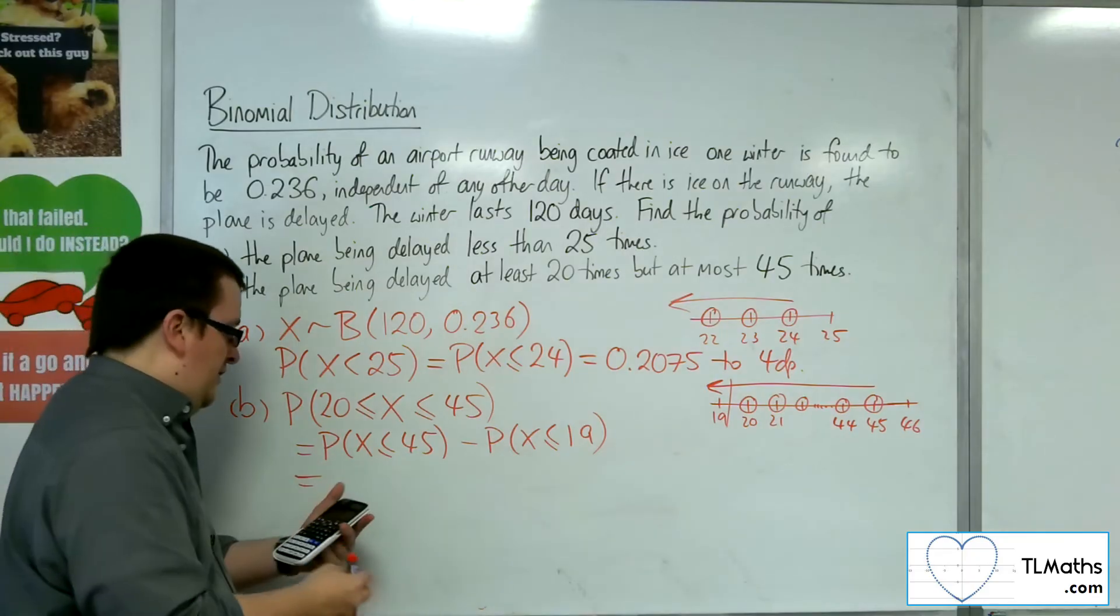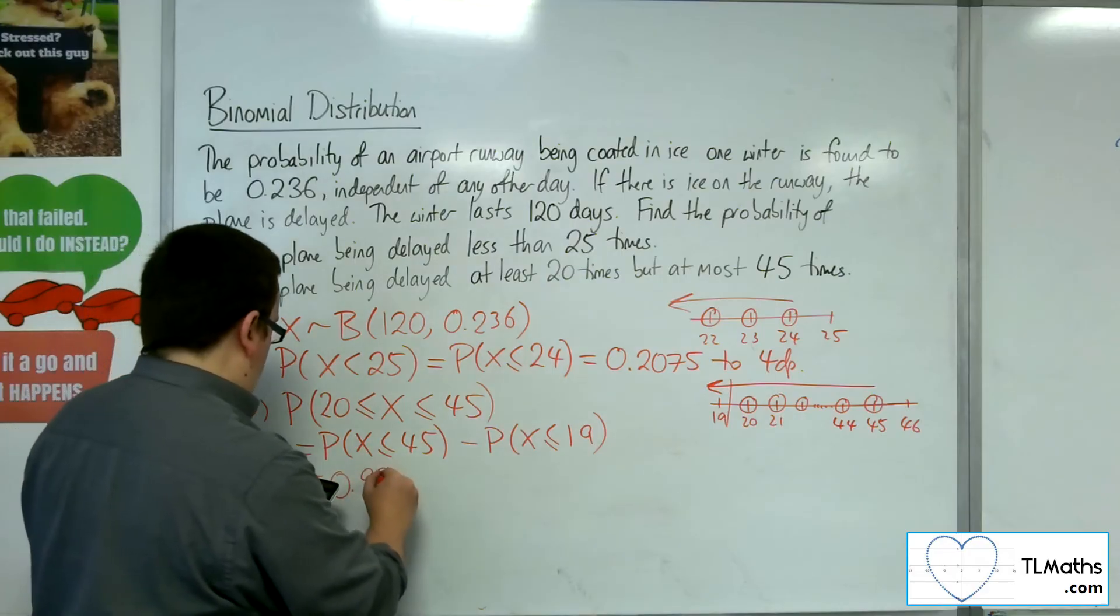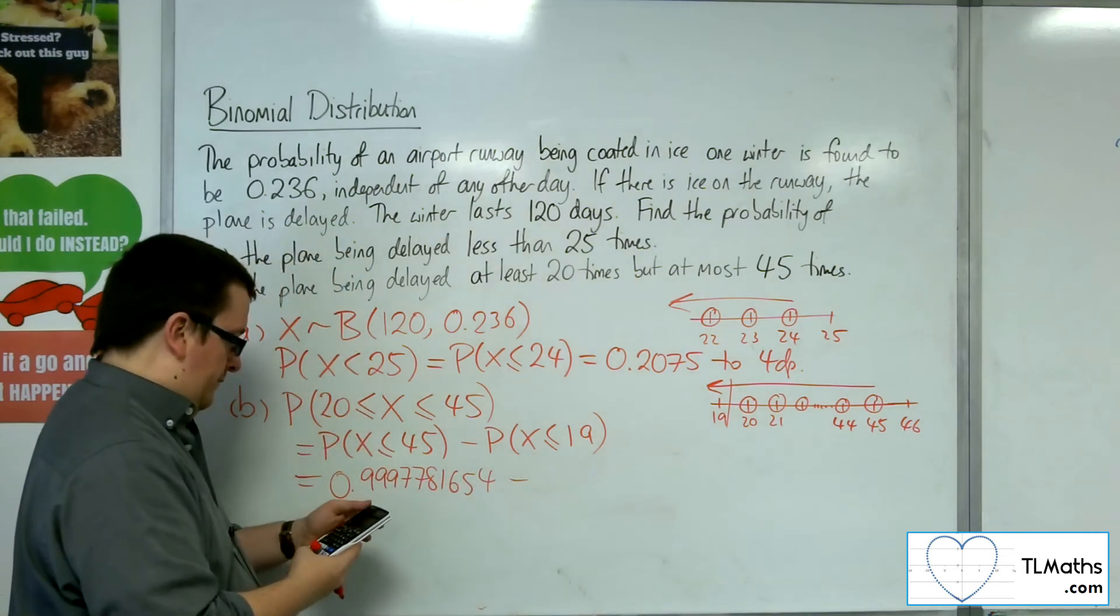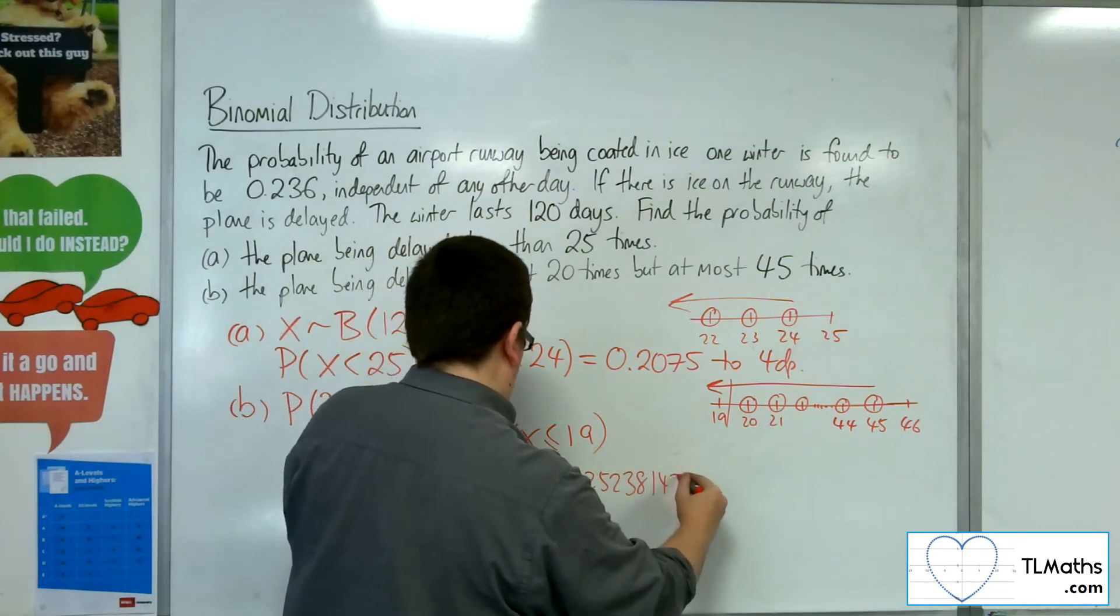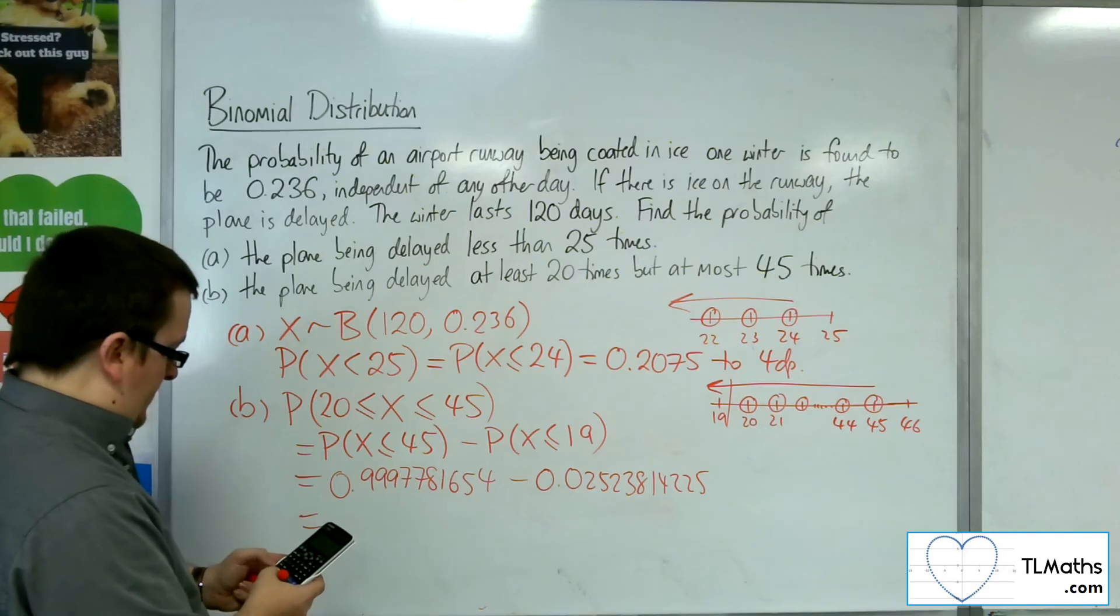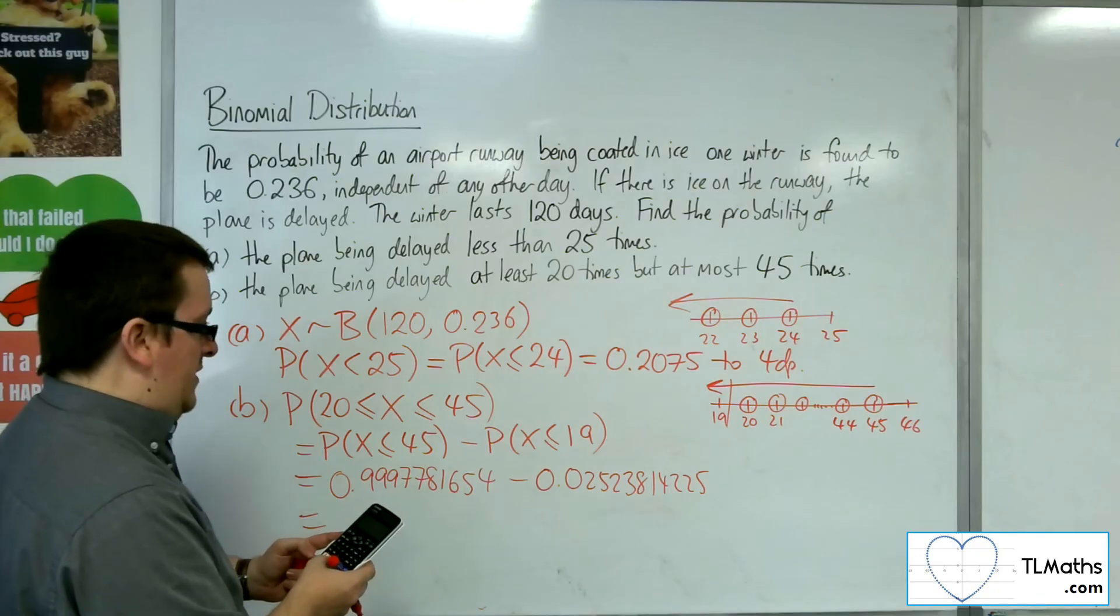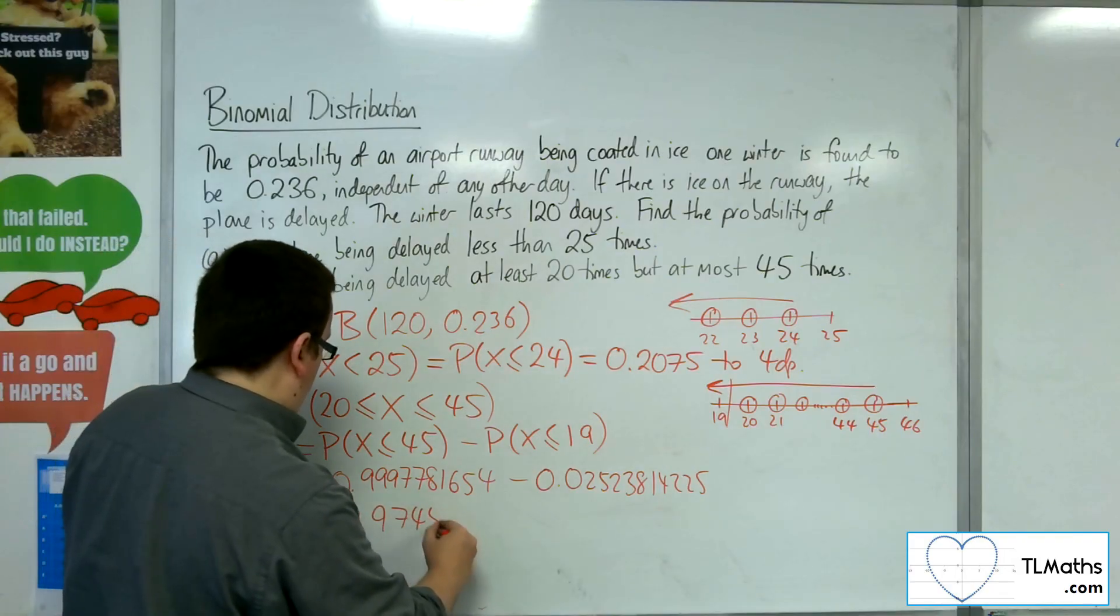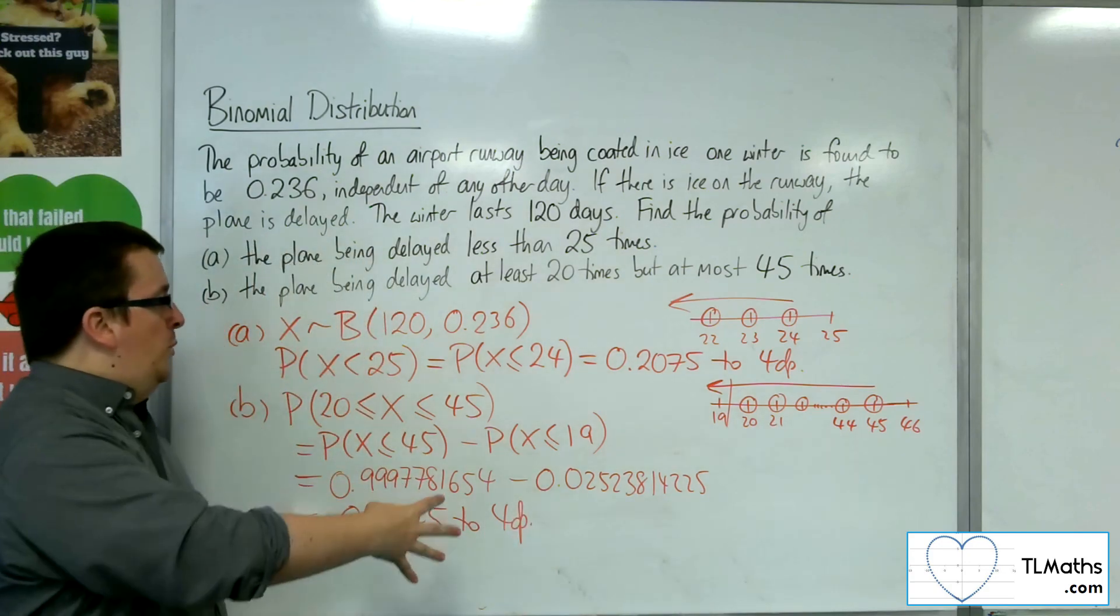Okay, so I need these two probabilities. So 45 is 0.9997781654, and 19 is 0.02523814225. So if I work that out, 0.9997781654, take away 0.02523814225. And that gets us 0.9745 to four decimal places. Okay, and so there are the two answers to my question.